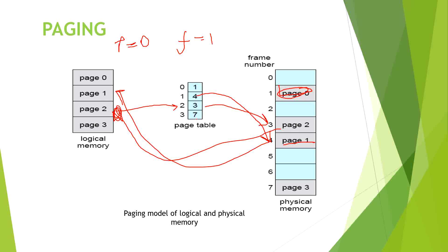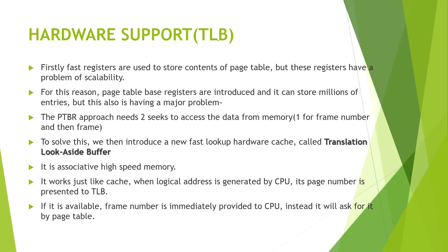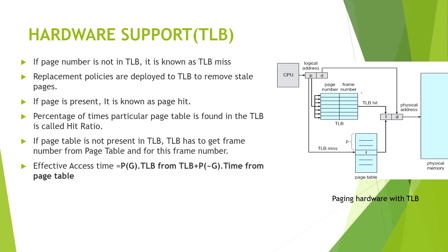Now talking about hardware support: we also provide hardware support to the page table. Pages that are frequently requested by the CPU are stored in the Translation Lookaside Buffer, or TLB. As you can see in this example, the TLB stores the page number and frame number pairs. If the CPU is requesting any page number, it will check whether it is present in the TLB. The TLB acts like a cache for the page table.